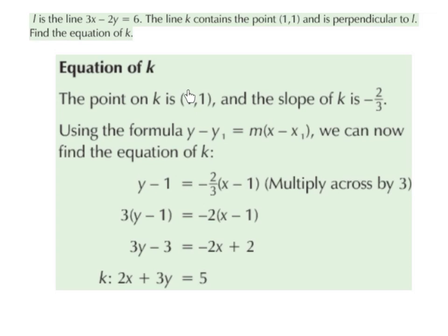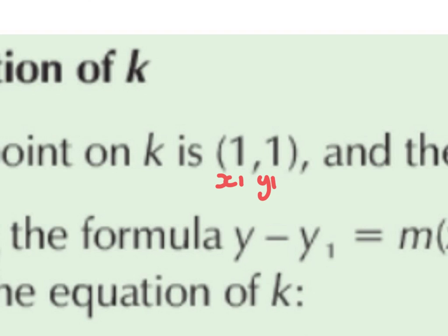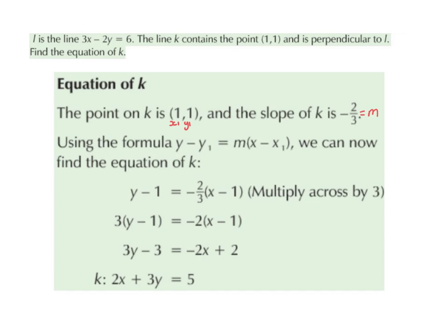We label our point x1, y1. So x1 equals 1, y1 equals 1, and m equals minus 2 over 3. Using y minus y1 equals m times x minus x1, we swap y1 for 1, m for minus 2 over 3, and x1 for 1. So we have y minus 1 equals minus 2 over 3 times (x minus 1).